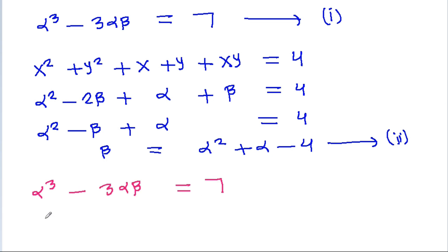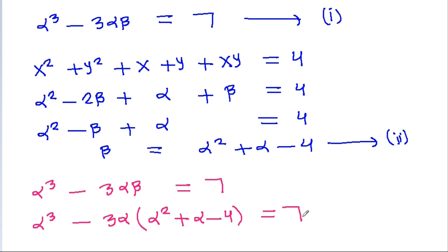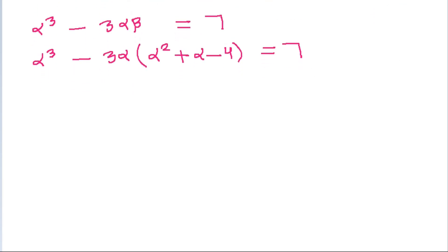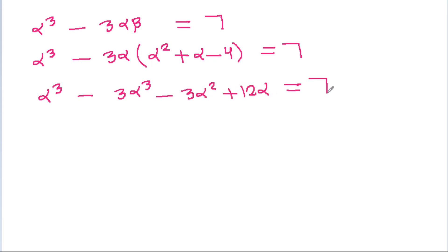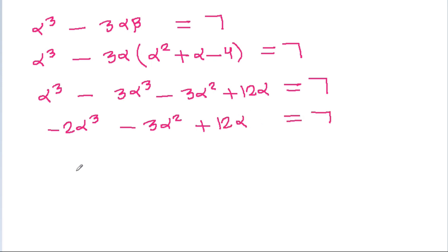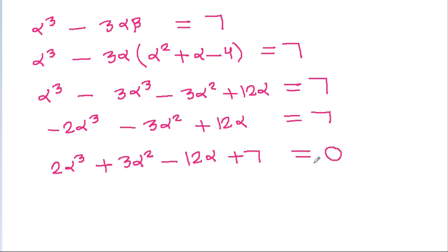If we put the value of β from equation 2 into equation 1, we get α³-3α(α²+α-4)=7, which expands to α³-3α³-3α²+12α=7, giving -2α³-3α²+12α=7, and thus 2α³+3α²-12α+7=0.